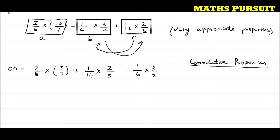What is commutative property? Commutative property says that if it is -B + C, that can be written as C - B. Or in other words, if we have A + B we can consider B + A. This is known as commutative property.